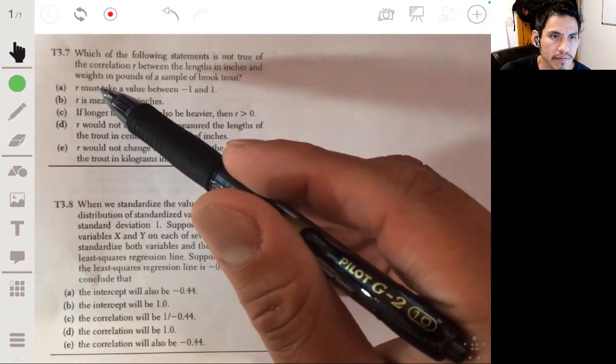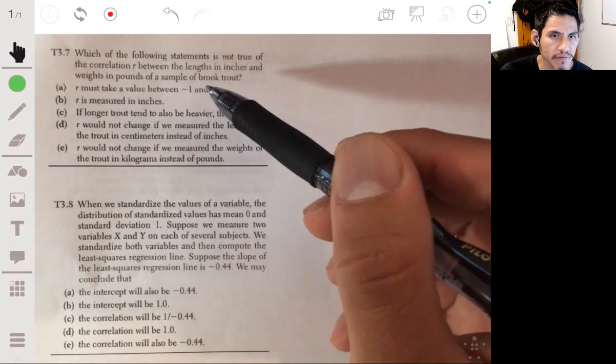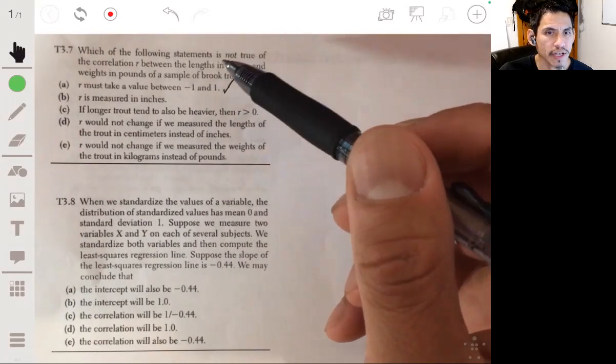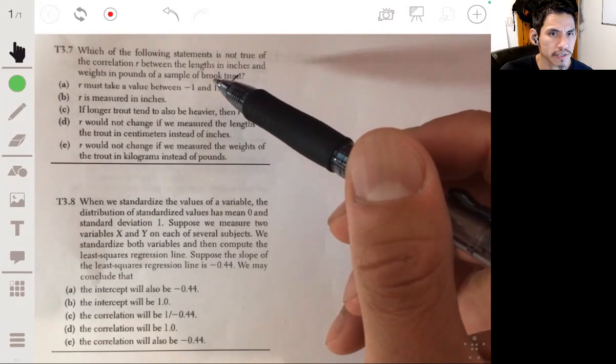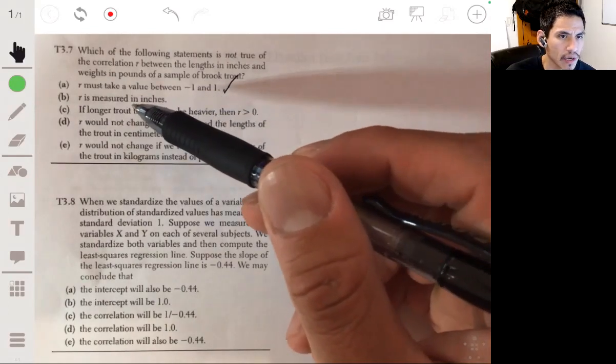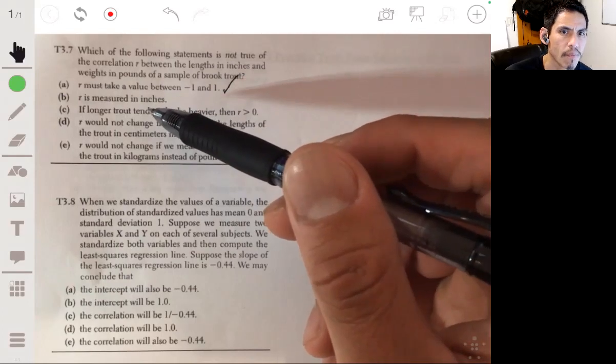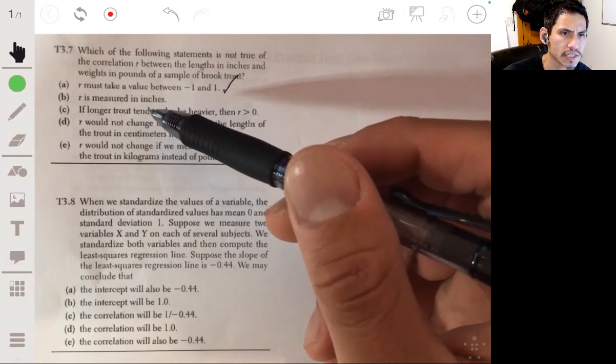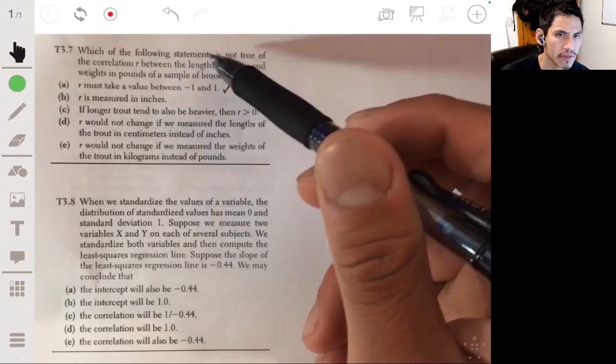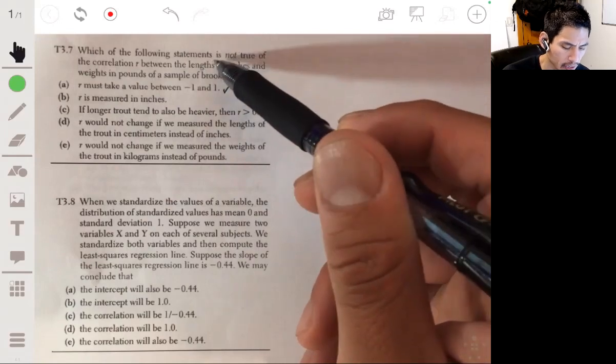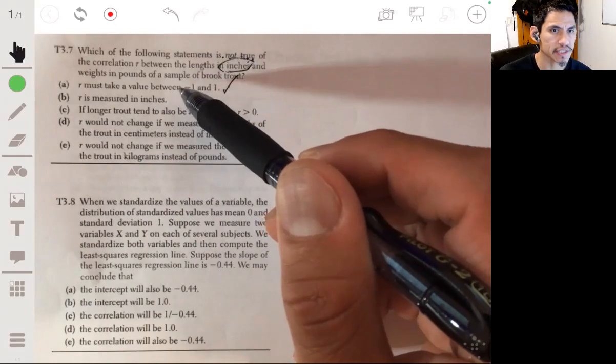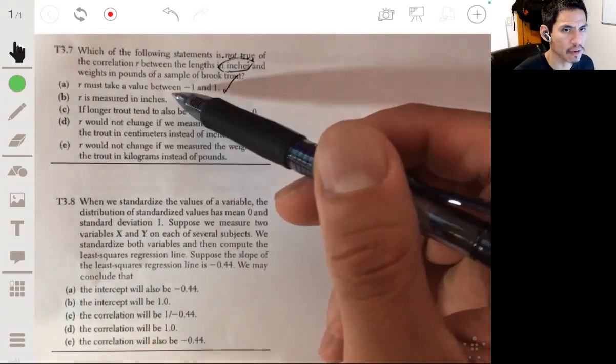So A, because R must take a value between negative one and one, well that is true. That's how it is measured, is the value between negative one and one closer to zero, the weaker it is, the closer to one or negative one, the stronger the correlation. R is measured in inches, it's not true, so okay, so even though we're talking about the lengths of these trout in inches,